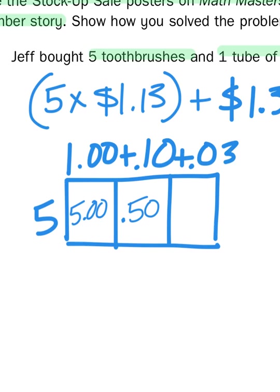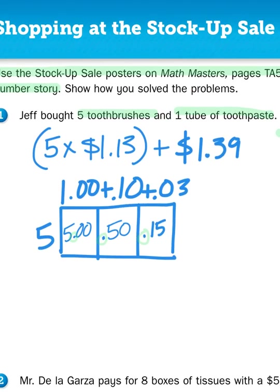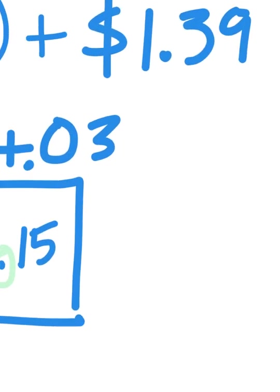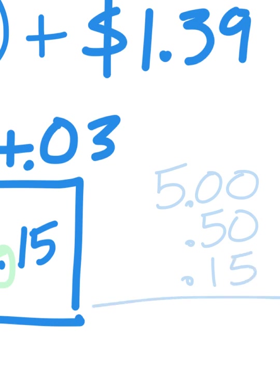And then I'm going to multiply five times three hundredths, or five times three pennies. Five times three gives me fifteen, so five groups of three pennies would give me fifteen pennies. I have to remember to put that decimal point to the left of my digits. So now that I have my partial products all together, I can now add those products together to get my total product. So I'm going to add five dollars plus fifty cents plus fifteen cents.